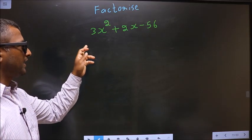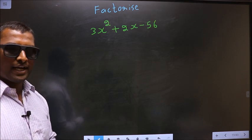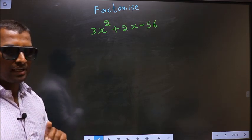Factorize 3x² + 2x - 56. To factorize, step 1: